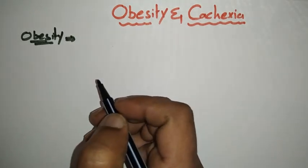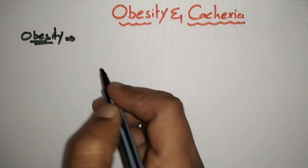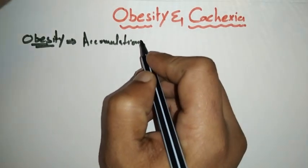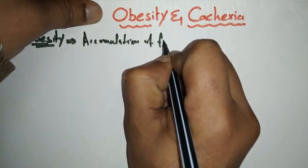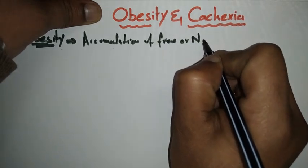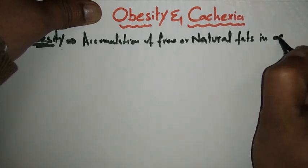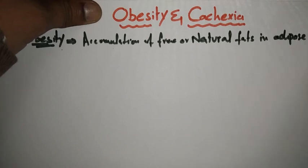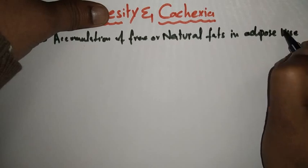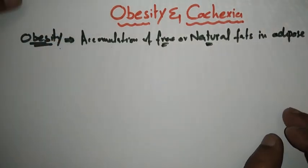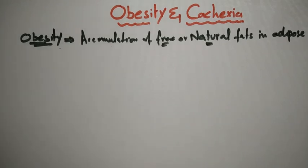Obesity is the accumulation of free or natural fats in adipose tissues. When extra fat accumulates in adipose tissues, it causes an increase in weight, and that is known as obesity. As we move further, you can understand what is meant by free and natural fats.